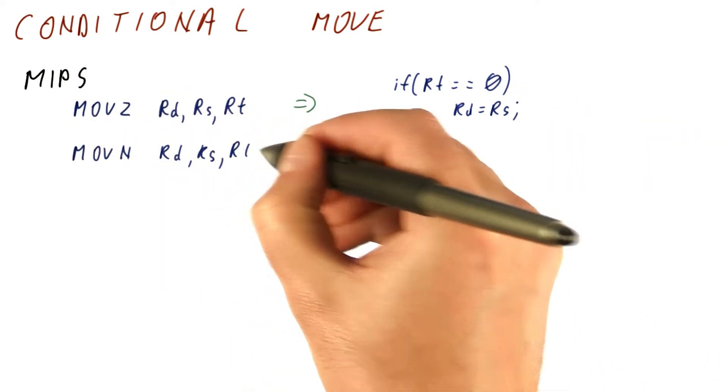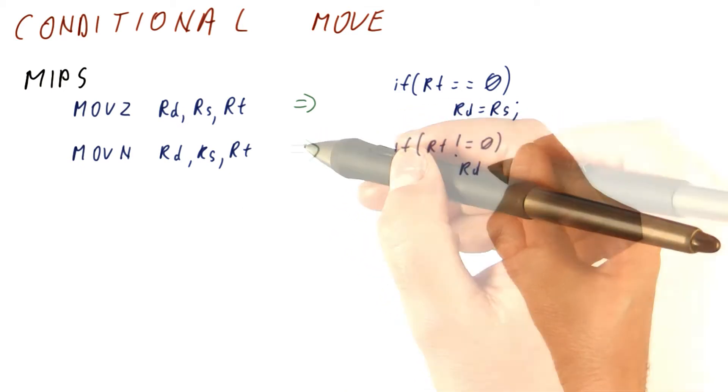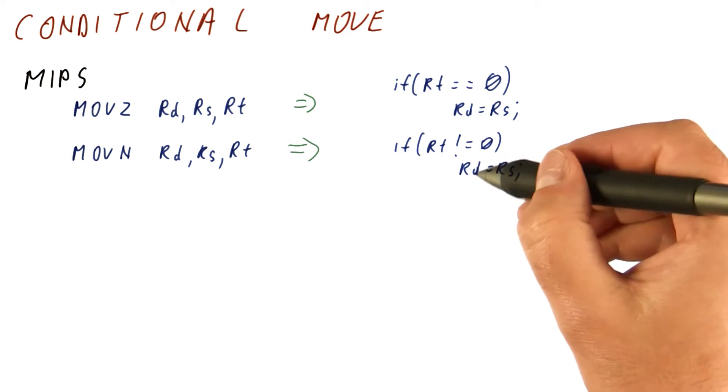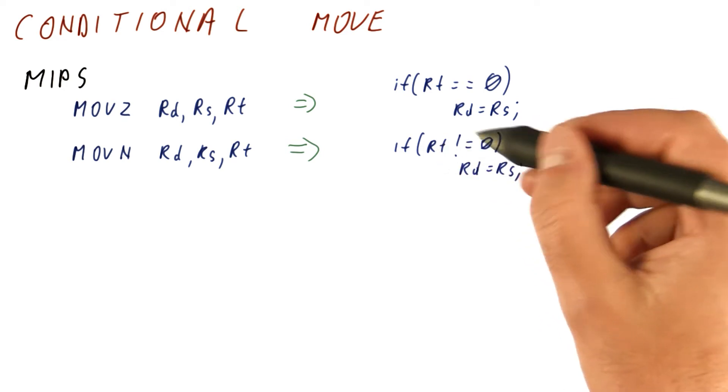MIPS also has a MOVE N instruction that works exactly the same way, except it moves RS into RD only if RT is not zero.